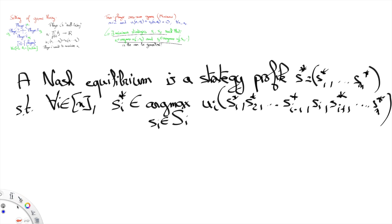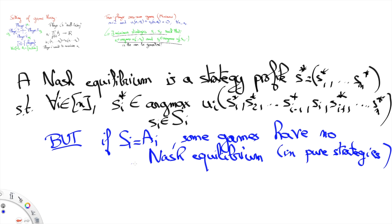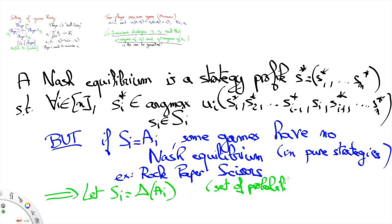As exemplified by the rock-paper-scissors game, there is not always a Nash equilibrium with deterministic, also called pure, strategies. However, again following von Neumann's footsteps, Nash turned to randomized, also called mixed strategies.